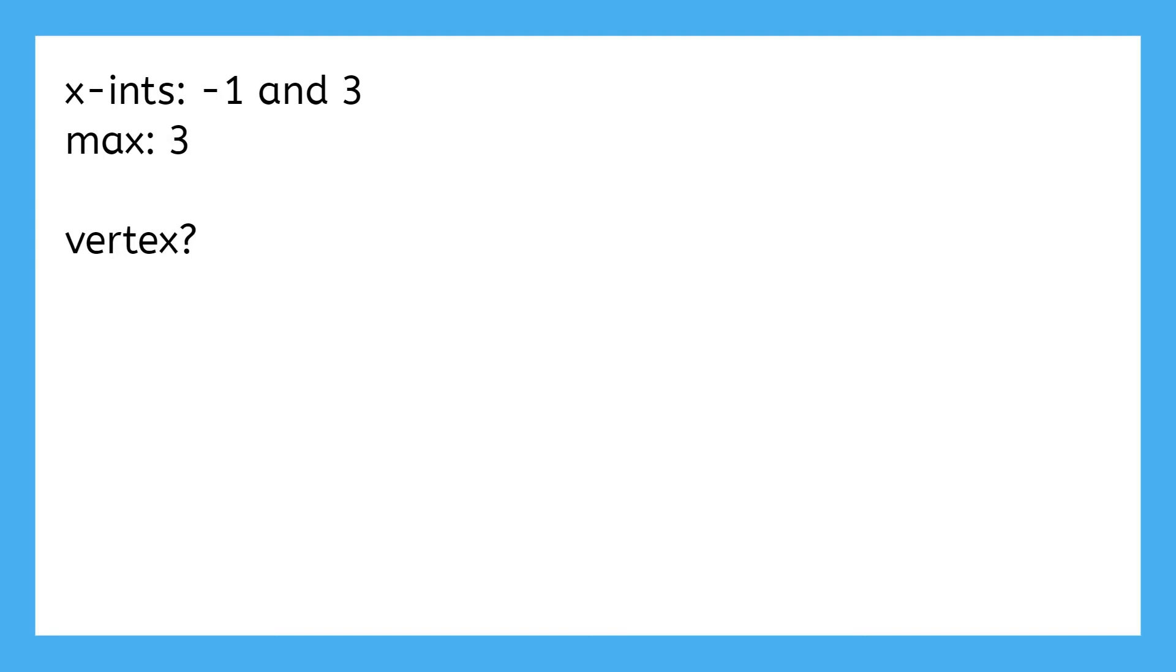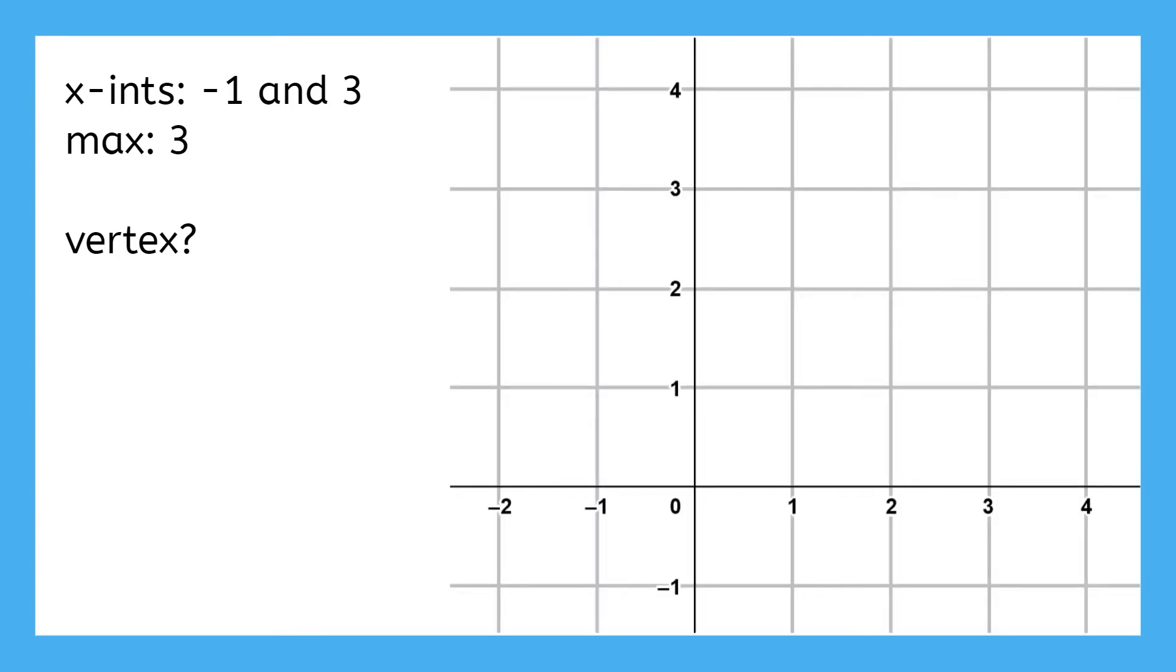A parabola has x-intercepts at negative one and three. It has a maximum at three. Where is its vertex? We've been told where the x-intercepts are at negative one and three. So that means the line of symmetry is in the middle and that the vertex is somewhere on that line of symmetry.